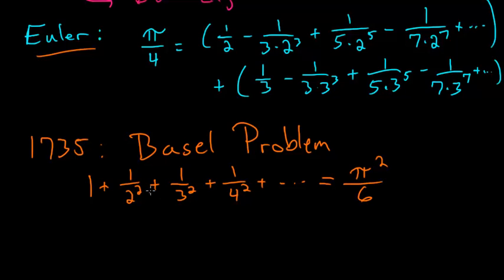If you replace this exponent, this 2 here, with any other even exponent, then the sum will add up to pi to that even power multiplied by some number. For example, if I have 1 plus 1 over 2 to the fourth plus 1 over 3 to the fourth and so on, this adds up to pi to the fourth power divided by 90.